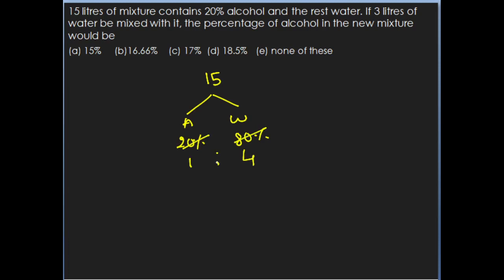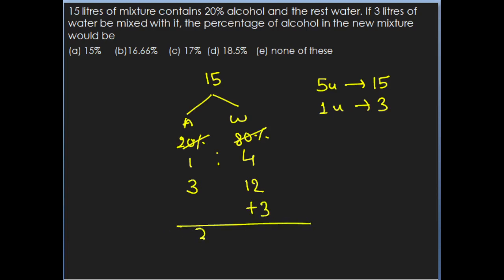Now, 15 liters of mixture contains alcohol and water in the ratio 1 is to 4. In terms of quantity, 5 units equals 15 liters. Therefore 1 unit value is 3 liters, so alcohol is 3 liters and water is 4 into 3 which is 12 liters. Now we are adding 3 liters of water to this, so the final mixture contains 3 liters of alcohol and 15 liters of water.